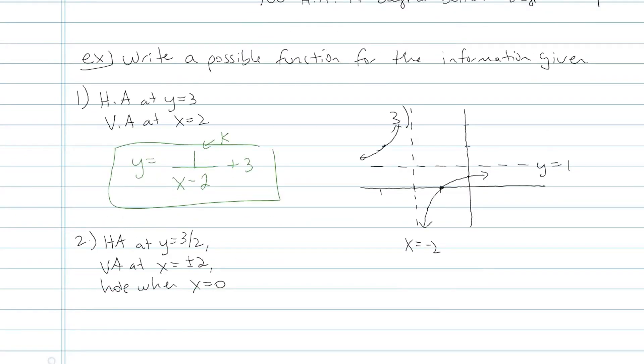Let's try another one. Horizontal asymptote at y equals 3 halves, vertical asymptote at y equals plus or minus 2, and a hole at x equals 0. Since there's a hole going on, I can't use that top equation. It's kind of a bummer. Let's start with the hole.